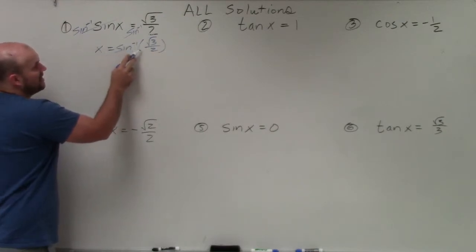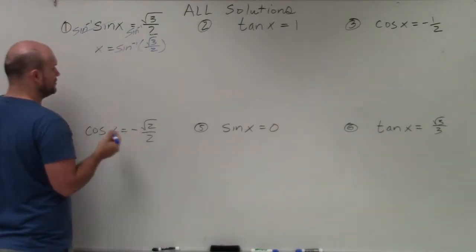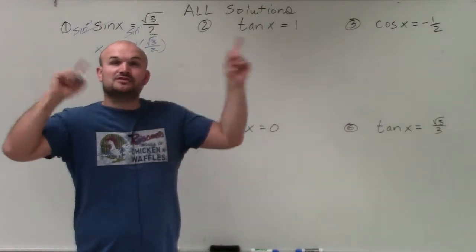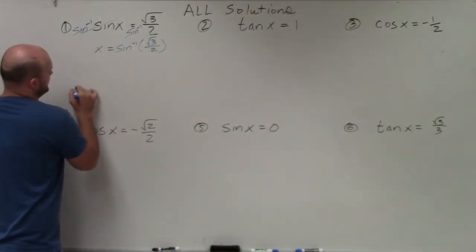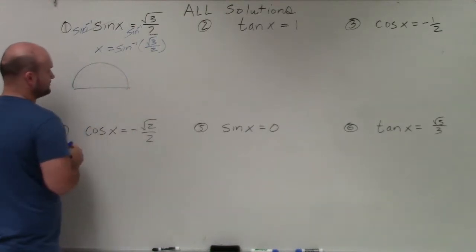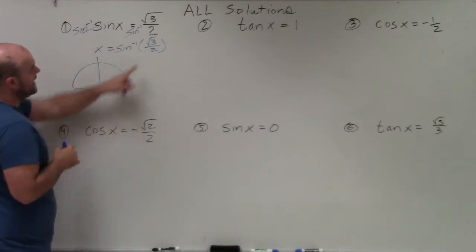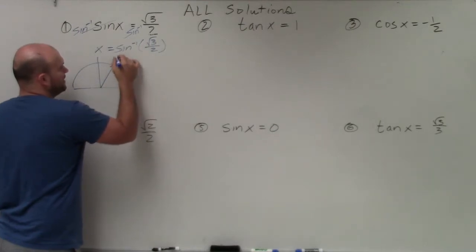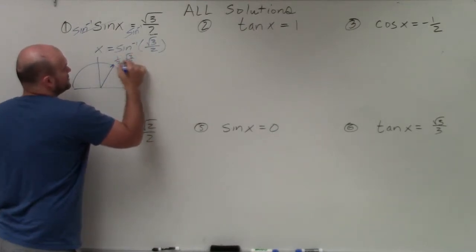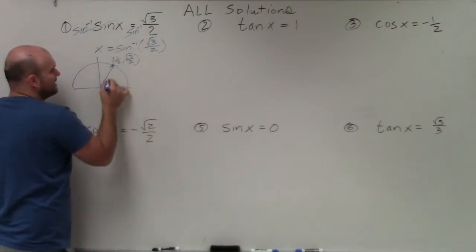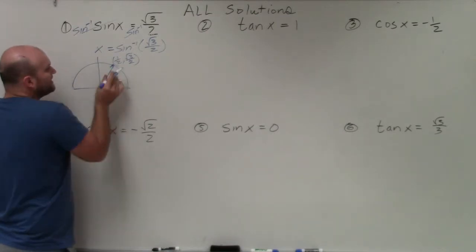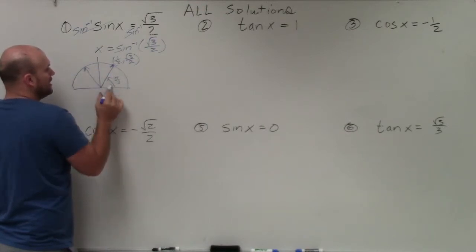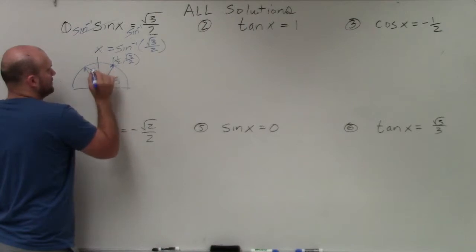So when is sine inverse equal to the square root of 3 over 2? Since that value is positive, sine is only positive in the first and second quadrants, so I'll graph the top half of the unit circle. Square root of 3 over 2 — remember, sine represents the y-coordinate — gives us the angle of pi over 3. If we reflect that over the y-axis, we also get the angle 2 pi over 3.